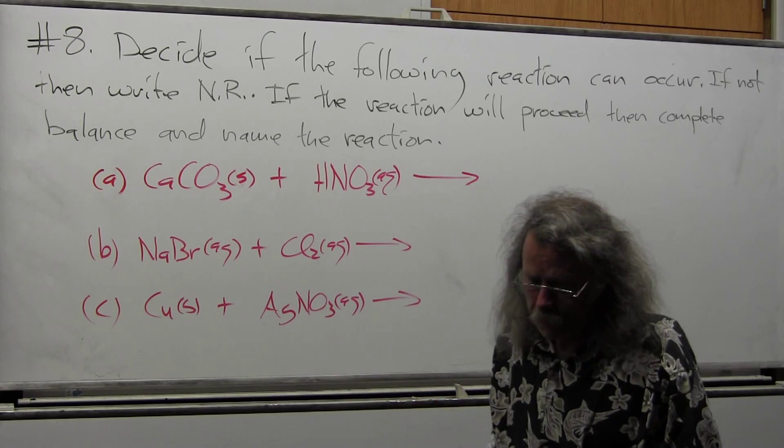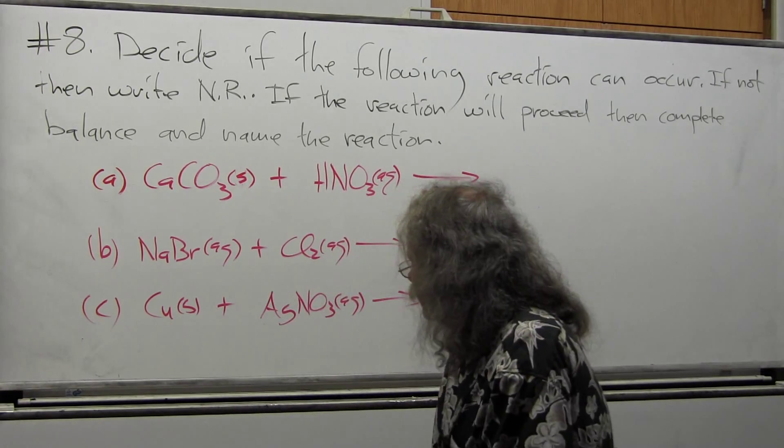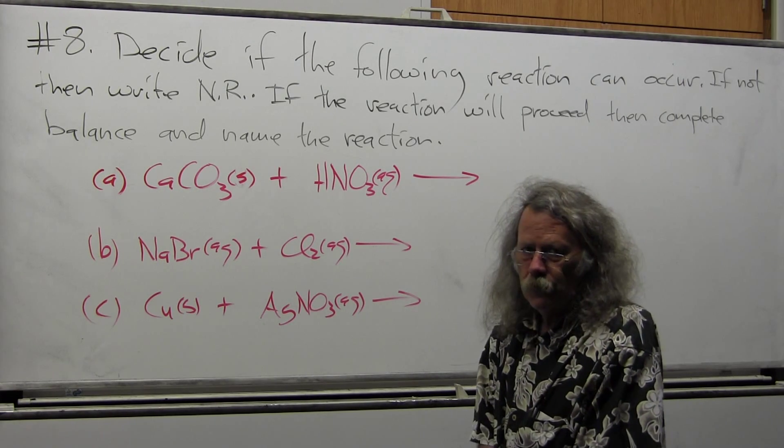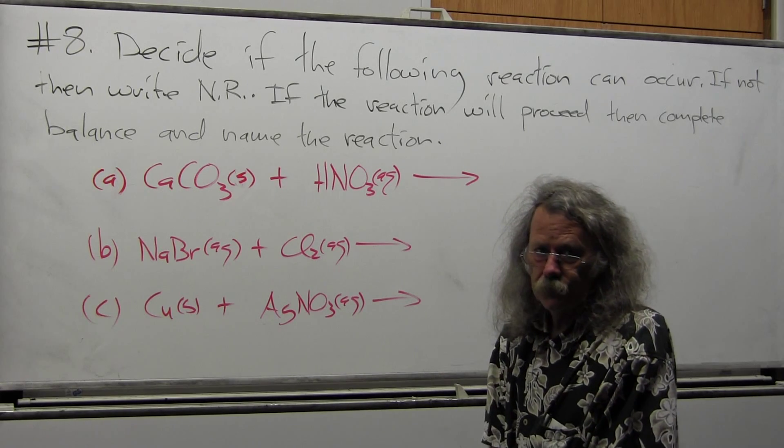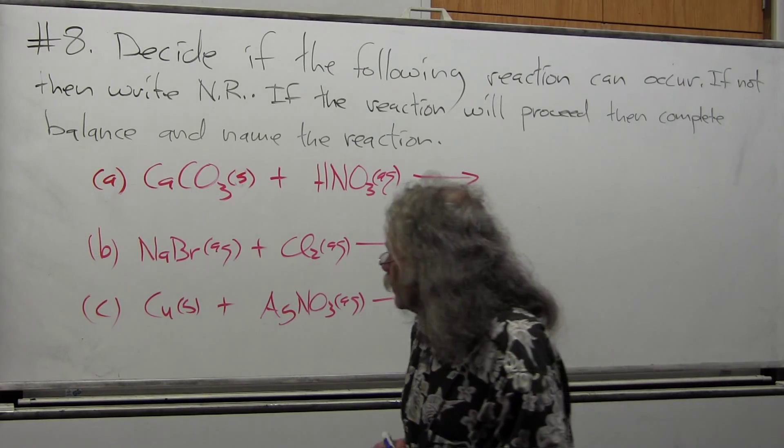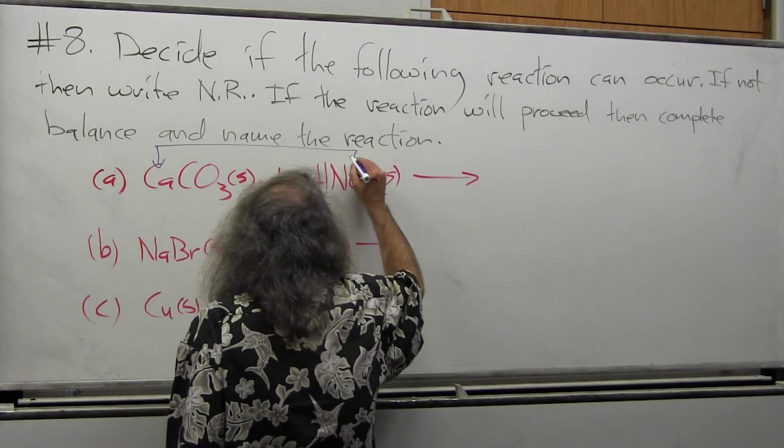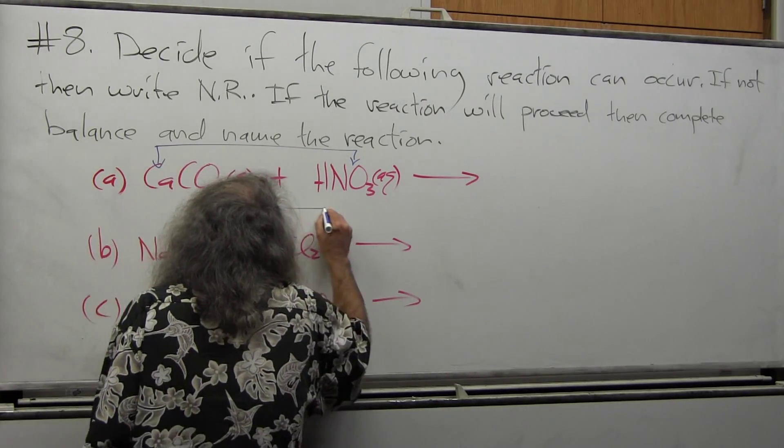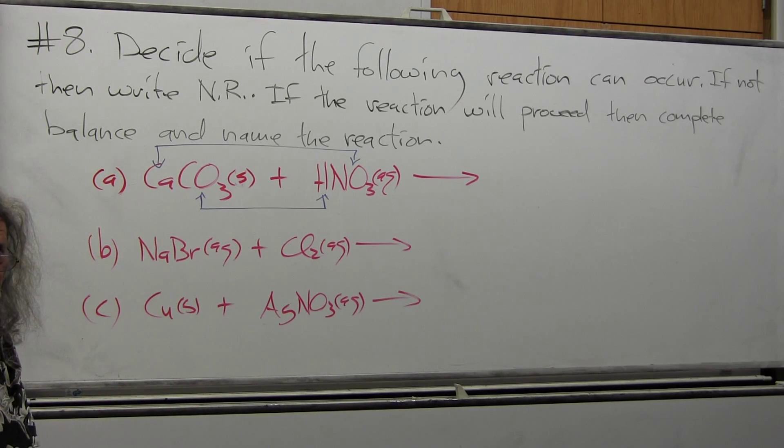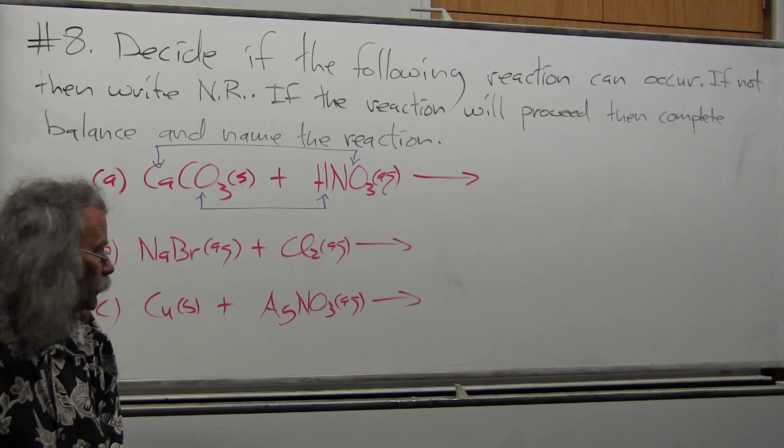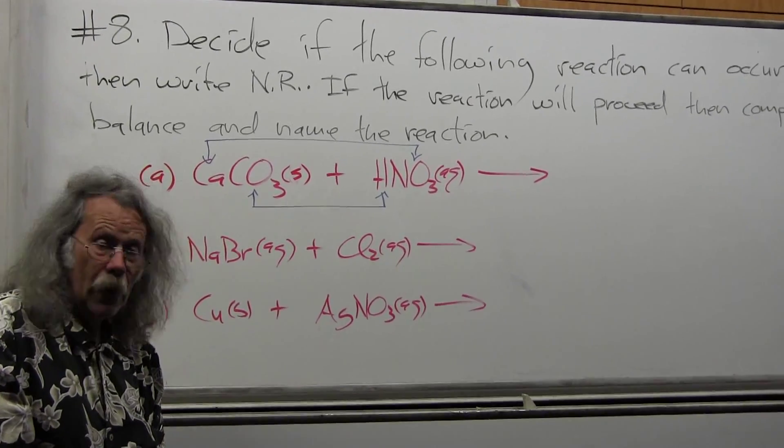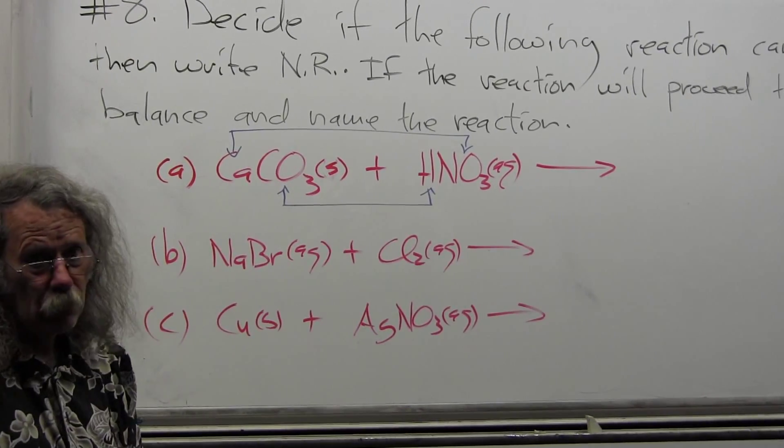We're given three reactions to choose from. Option A is calcium carbonate in the solid state plus nitric acid in an aqueous solution. We're going to do the same thing we do with all of them. We're going to look at the outer pair and the inner pair and check for the three possible reaction types. It can either be a metathesis process, a neutralization process, or both of those, or a redox process.